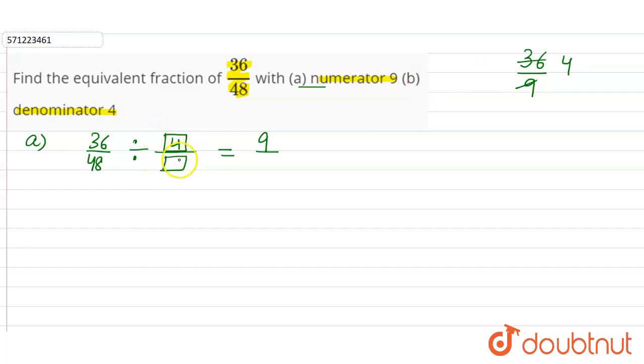Similarly in the denominator also we have to divide 48 by 4. Now 48 divided by 4, so 4 into 1 is 4, 8 carry forwarded. Now 4 into 2 is 8, so 4 into 12 is 48.